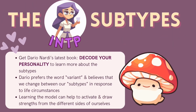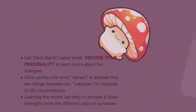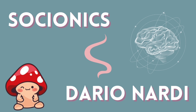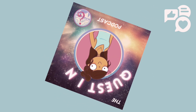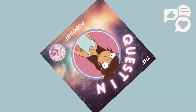Both Viktor Galenko and Dr. Dario Nardi call this subtype theory a theory on variants of personality. Dario specifically claims it's best to look at these four subtypes as different strengths each type has access to. I'll make some future content about Viktor Galenko's framework in Socionics with subtypes. Thank you so much for checking out this video — until next time, please take care.